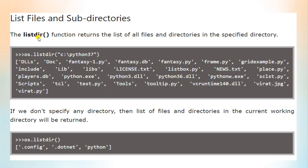The next function is listdir. It is used to return the list of all the files and directories under a specified directory, like os.listdir('python'). The specified directory is passed as an argument to the listdir function, and under it we have a list of different files and directories. Note that when no particular directory is specified as an argument in the listdir function, the list of files and directories in the current working directory will be returned.